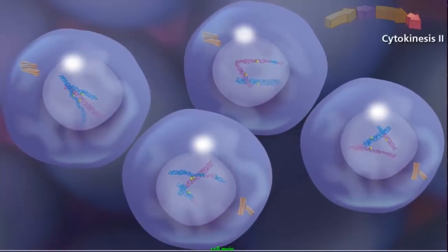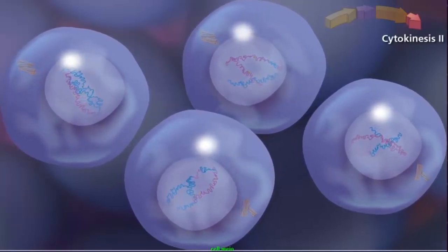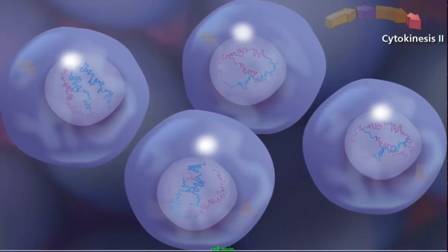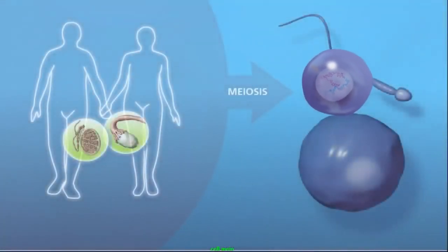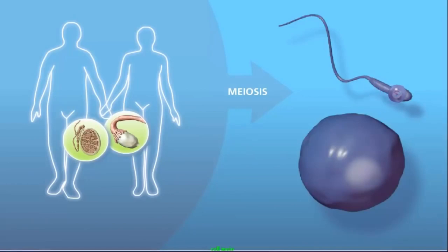Cytokinesis occurs and cleavage furrows separate the two daughter cells into four haploid daughter cells. The haploid daughter cells will specialize into gametes, either sperm or egg.